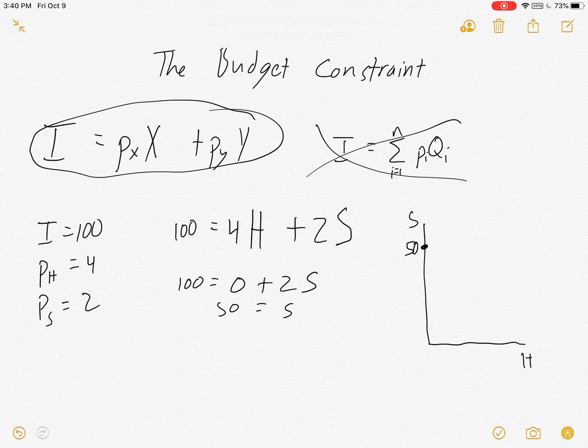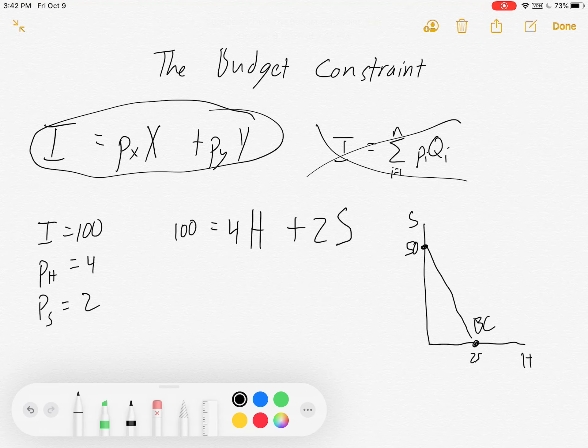So if I spend all my money on socks but not on hamburgers, I can buy 50 pairs of socks. If I want to find the hamburger intercept, I set my socks equal to 0. 100 equals 4H plus 0, which means that H is equal to 25.